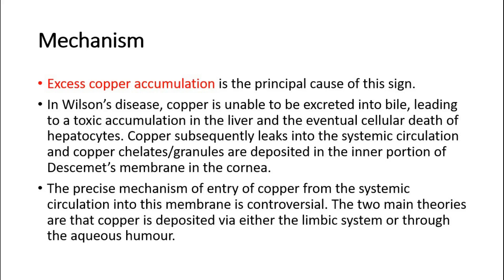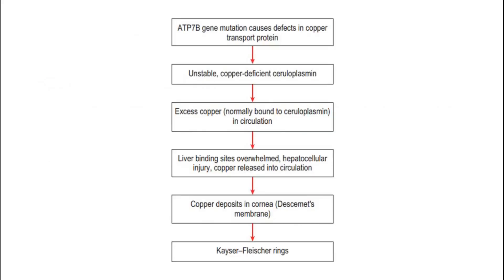This is a flow chart showing the mechanism of Kaiser Fleischer rings. There is an ATP7B gene mutation, causing defects in copper transport protein, thus causing unstable and copper-deficient ceruloplasmin. There is then excess copper in blood circulation. The liver binding sites are overwhelmed, plus hepatocellular injury, and copper is released into circulation. Copper is then deposited in Descemet's membrane in the cornea, causing the Kaiser Fleischer rings appearance.